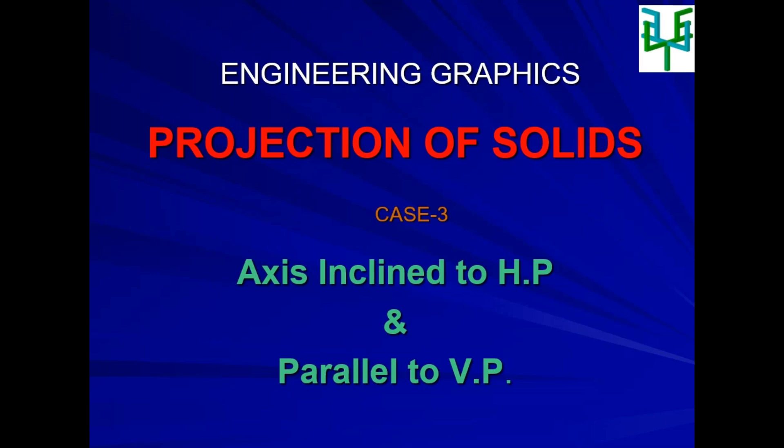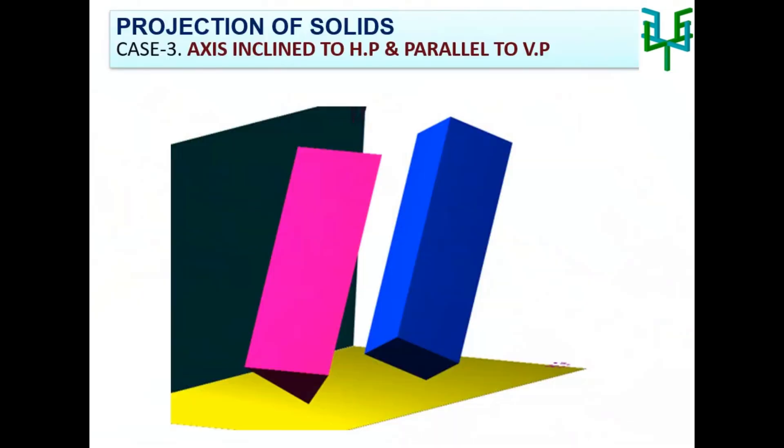In this video, we are going to discuss projection of solids with the condition axis inclined to HP and parallel to VP. When a solid is positioned with its axis inclined to any one of the planes, the projection — that means the elevation and plan of the solid — can only be drawn in two stages.